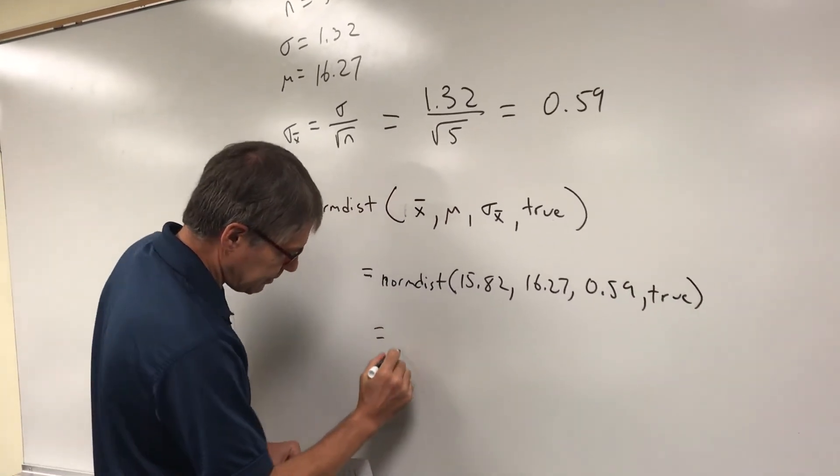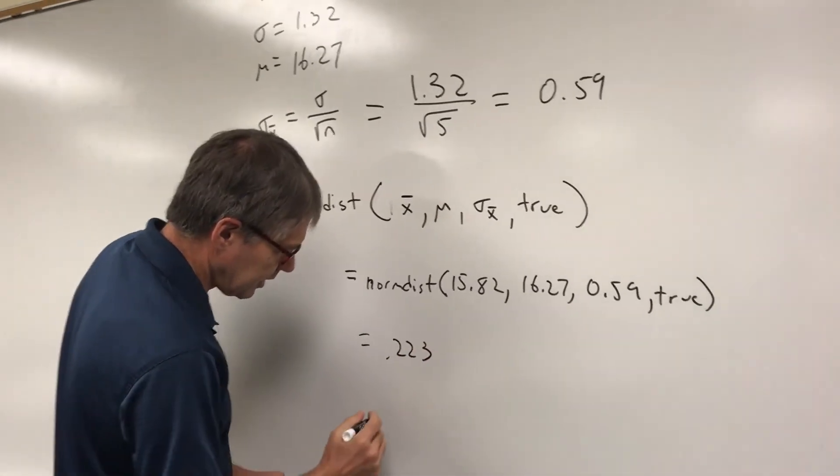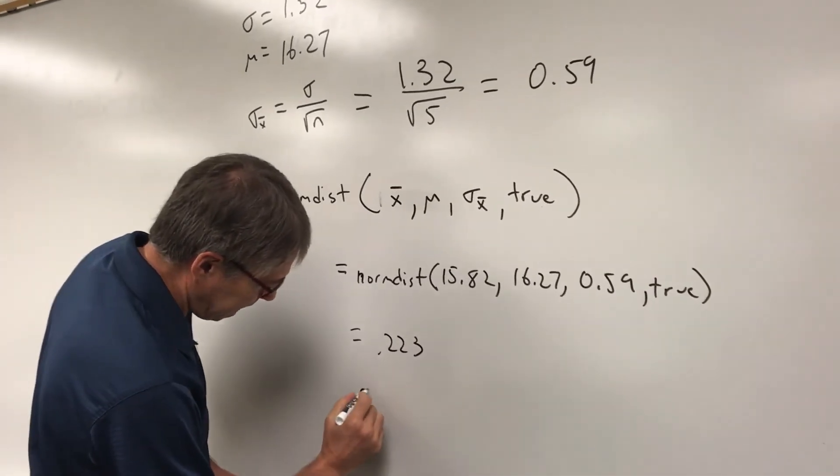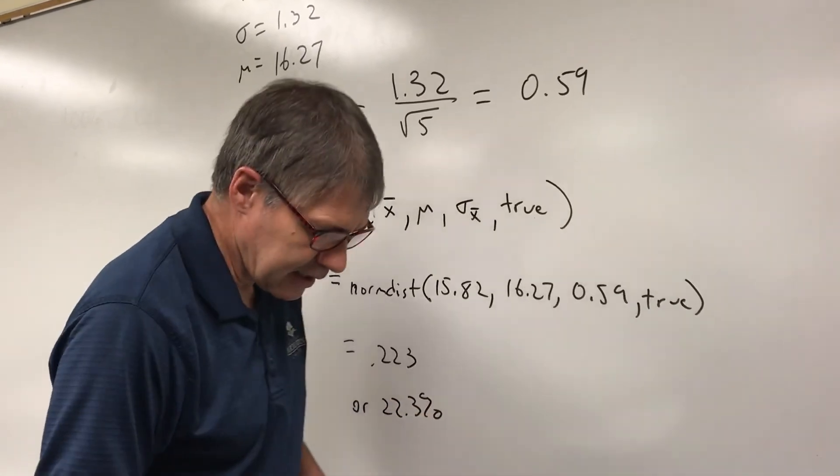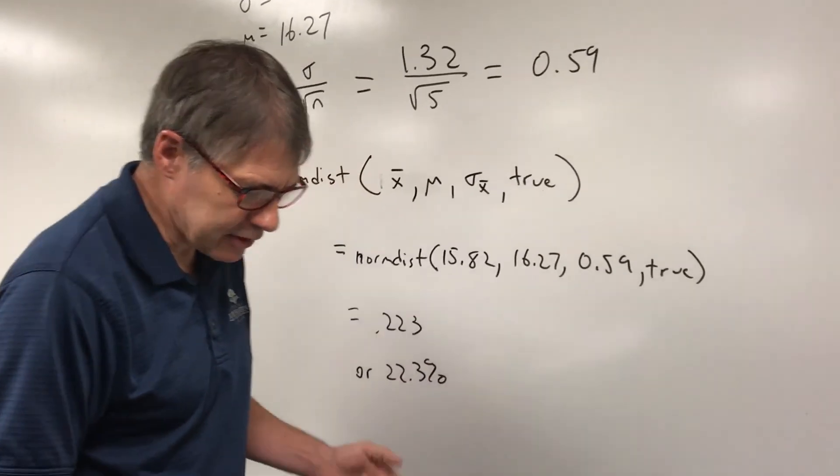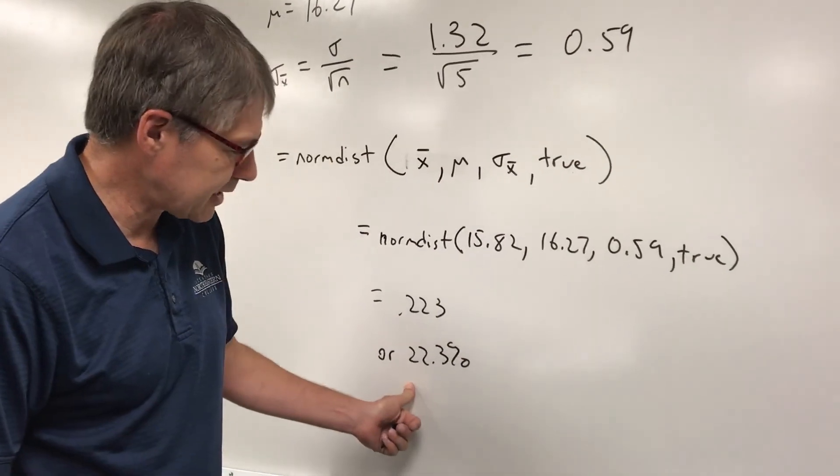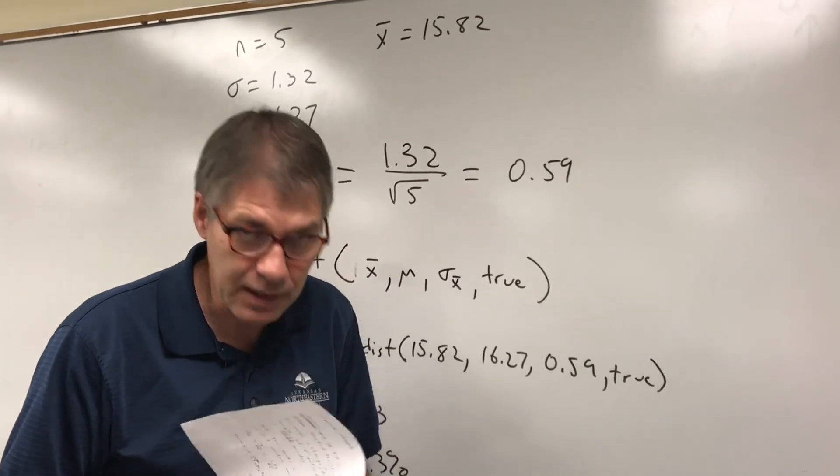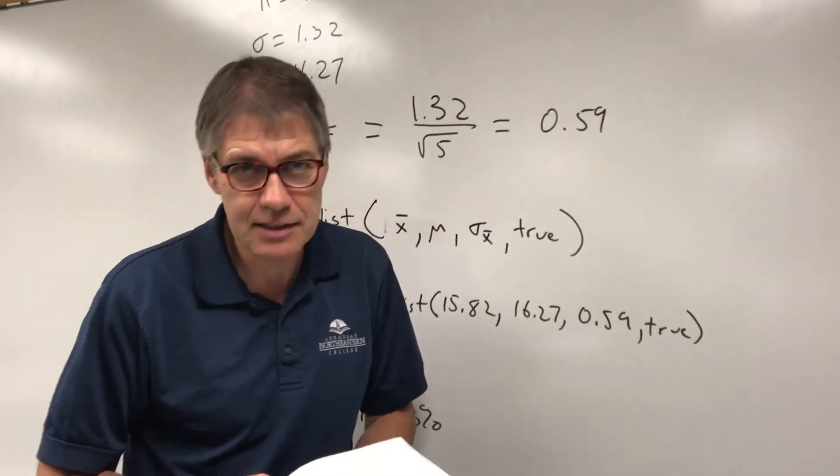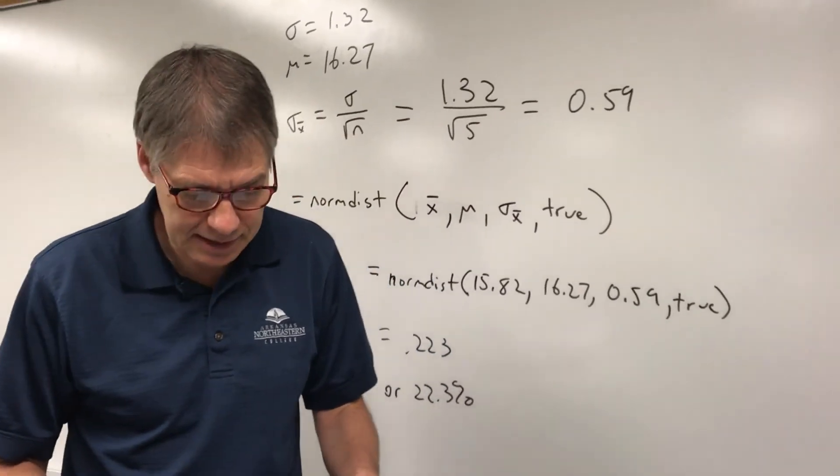And now kick back 0.223 or 22.3%. What that tells me is that I have a 22.3% probability of getting a 15.82 just by random chance. So it's about a one in four chance. So it's tough to make the call that says, yeah, this really did make a change.